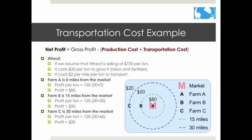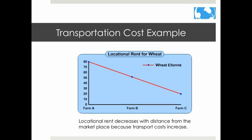For example, let's look at wheat and assume it sells for $100 per ton. It costs $20 a ton to grow wheat and $2 per mile to transport it. As you can see, profit decreases the further you are from the market due to transportation costs. Plotted on the graph, it makes the most sense to grow any crop close to the market. Farm A makes the most money on wheat because it is closest to the market.